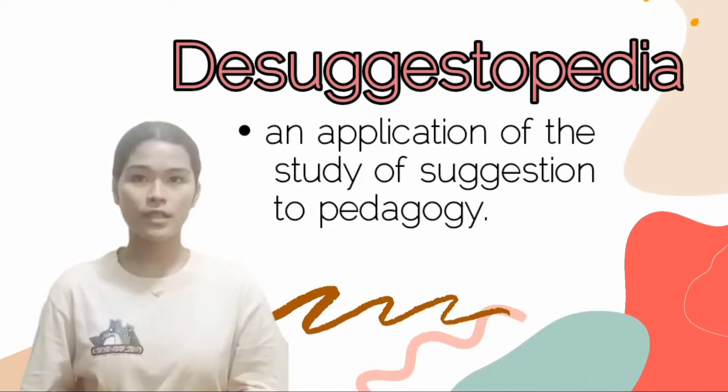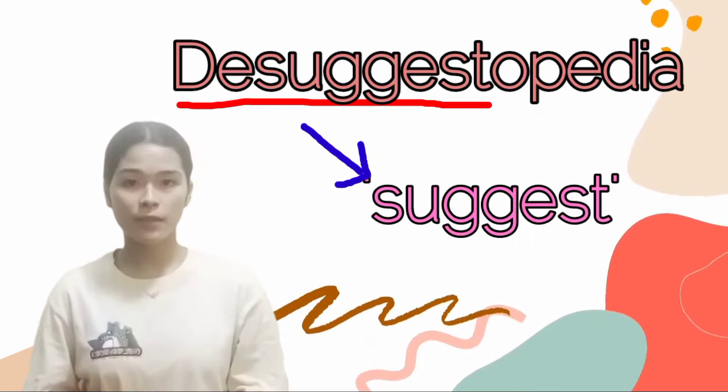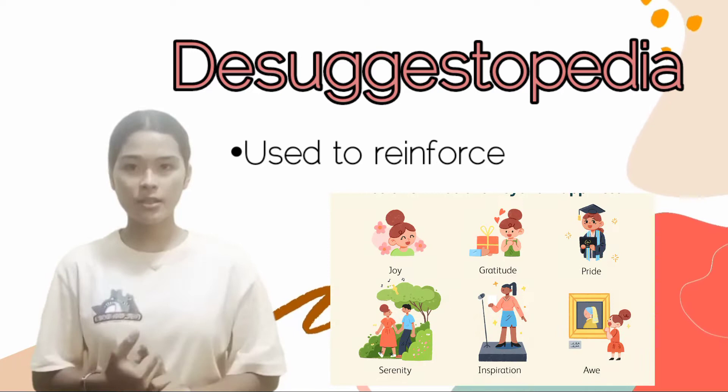Desuggestopedia, in definition, is an application of the study of suggestion to pedagogy. It is also the exact opposite of suggestion and is used to eliminate the negative feeling.